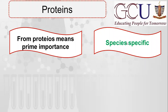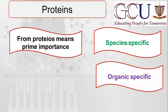Proteins differ in every animal and in plants. Along with being species-specific, proteins are also organ-specific, meaning they vary from organ to organ. Liver proteins are different from brain proteins, so proteins in different parts of the body are also different from each other. Not only does one organism differ from another, but one organ differs from another organ as well.